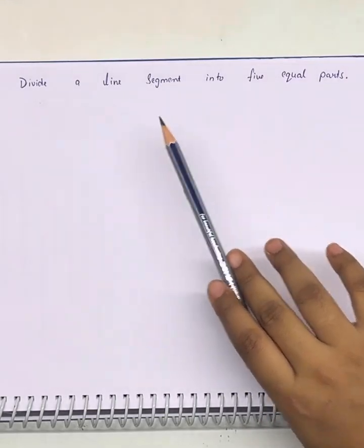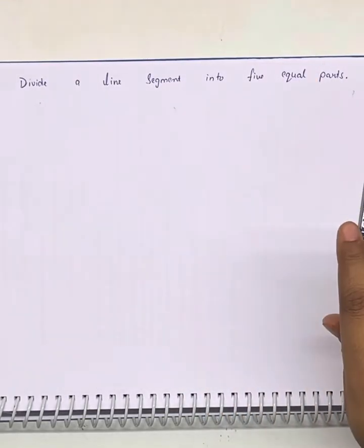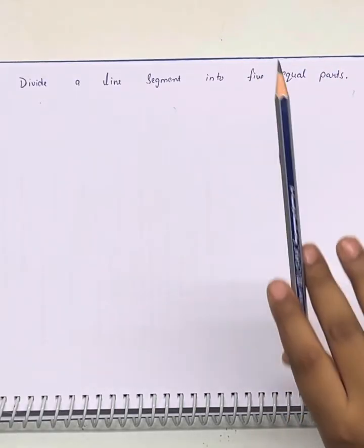We have to divide a line segment into five equal parts. The line can be of any length and we need to divide it in five equal parts, that is an odd number of equal parts.